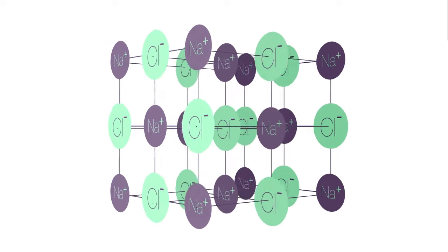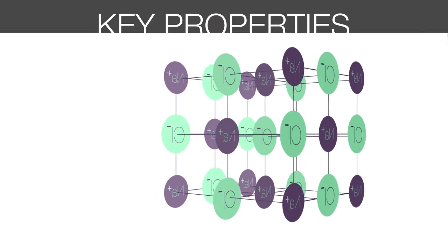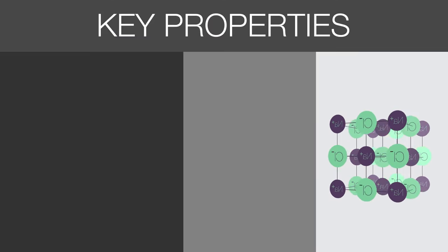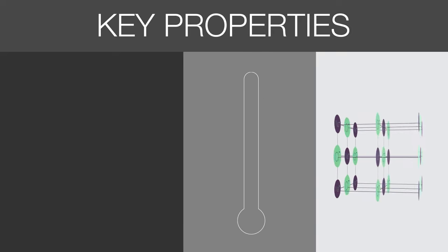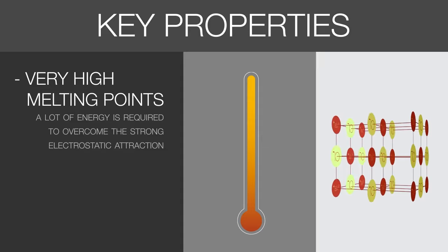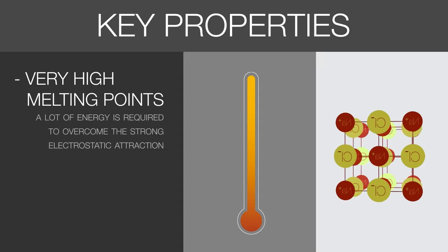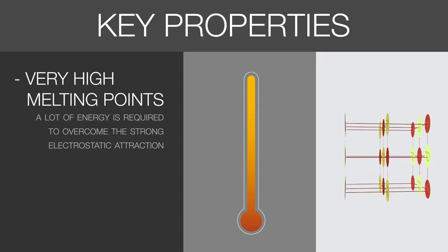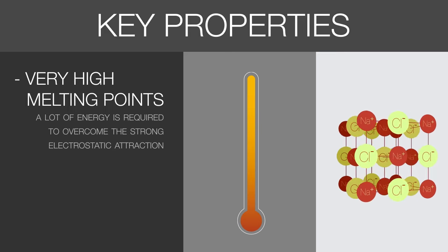Since this lattice structure is so strong, it explains some key properties of ionic compounds. Ionic compounds have very high melting points. This is because a lot of energy is required to overcome the strong electrostatic attractions holding the 3D lattice structure in place.